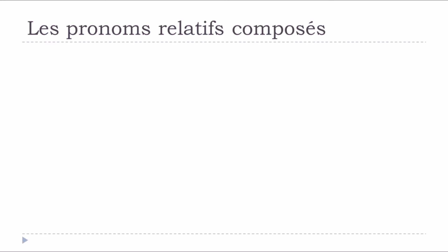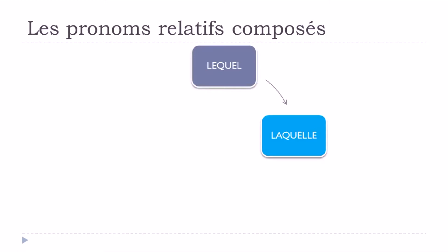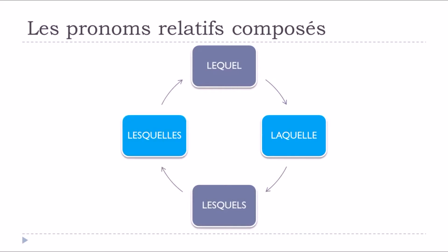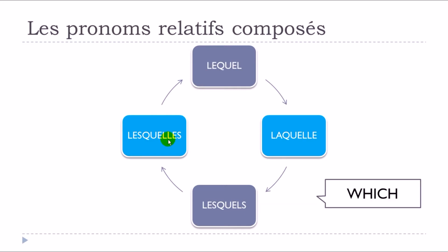In this video we will focus on four things. The first one will be lequel, then the feminine form laquelle, then lesquels — masculine plural — and lesquelles — the feminine plural. So lequel, laquelle, lesquels, and lesquelles. And basically if you want to translate these pronouns directly to English, you could use the word 'which'.